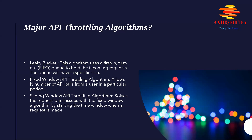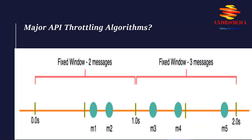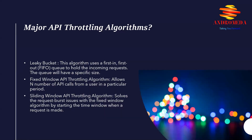The next algorithm is the fixed window API throttling algorithm. In this algorithm, the fixed window allows n number of API calls from a user in a particular period. For example, a fixed window algorithm allows two requests per minute. The timeframe is divided into fixed frames, each of one minute duration. At the start of a minute, a counter is set to zero. With every user request, the counter increases. If the counter reaches the upper limit before the time window ends, newer requests are rejected. At the beginning of every minute, the counter resets to zero.